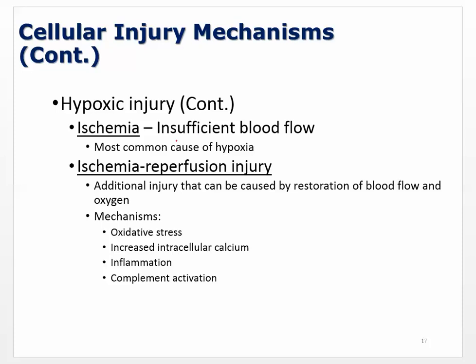Cellular responses to hypoxia: a decrease in ATP. Without enough oxygen, cellular respiration — production of ATP via the Krebs cycle and oxidative phosphorylation — can't take place. Without ATP, enzymes requiring ATP can't function properly. The major consequence is that the sodium-potassium pump fails. Up to 60% of a cell's ATP is used to power the sodium-potassium pump.